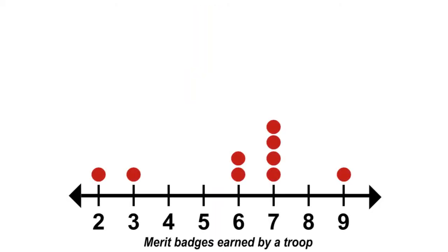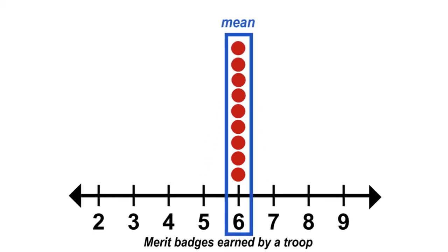Let's find the mean using the balance interpretation for this line plot showing the number of merit badges earned by Troop A. We will move the counters one by one towards the center starting with one counter on one side and then one counter from the other side. The balance point, or mean, is 6.